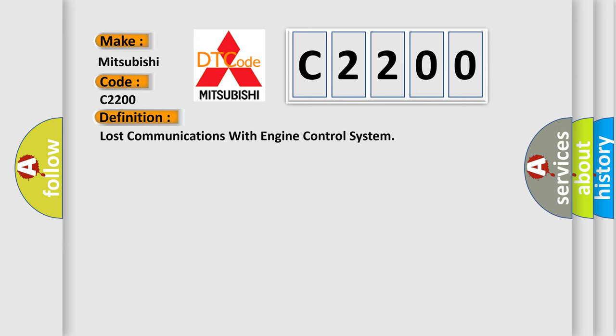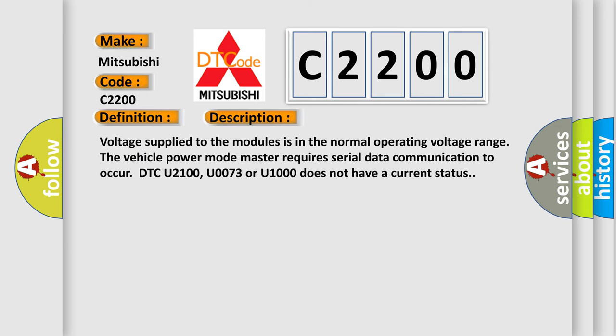The basic definition is Lost communications with engine control system. And now this is a short description of this DTC code. Voltage supplied to the modules is in the normal operating voltage range. The vehicle power mode master requires serial data communication to occur. DTC U2100, U0073 or U1000 does not have a current status.